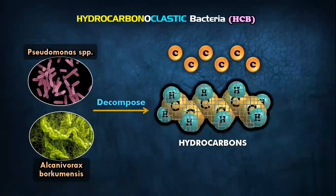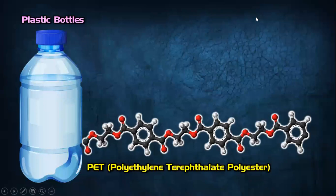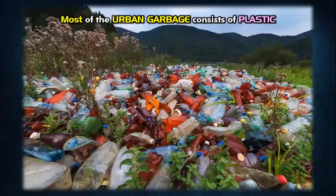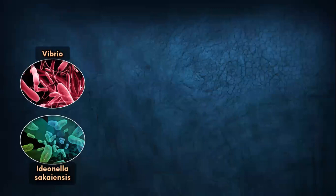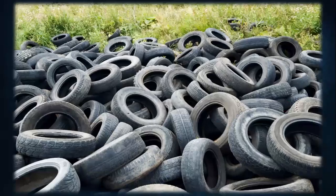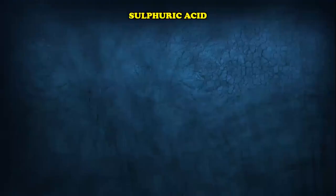PET bottles — polyethylene terephthalate polyester — which we use a lot on a daily basis, are a big part of urban garbage. We can use Vibrio and Ideonella sakaiensis to decompose these PET bottles. Similarly, rubber from garbage can also be decomposed using fungi like Actinomycetes, Streptomyces, Nocardia, and Actinoplane. Sulfuric acid that comes down with acid rain and from materials from mines can lead to erosion of metals — statues, bridges, and even buildings can get destroyed.